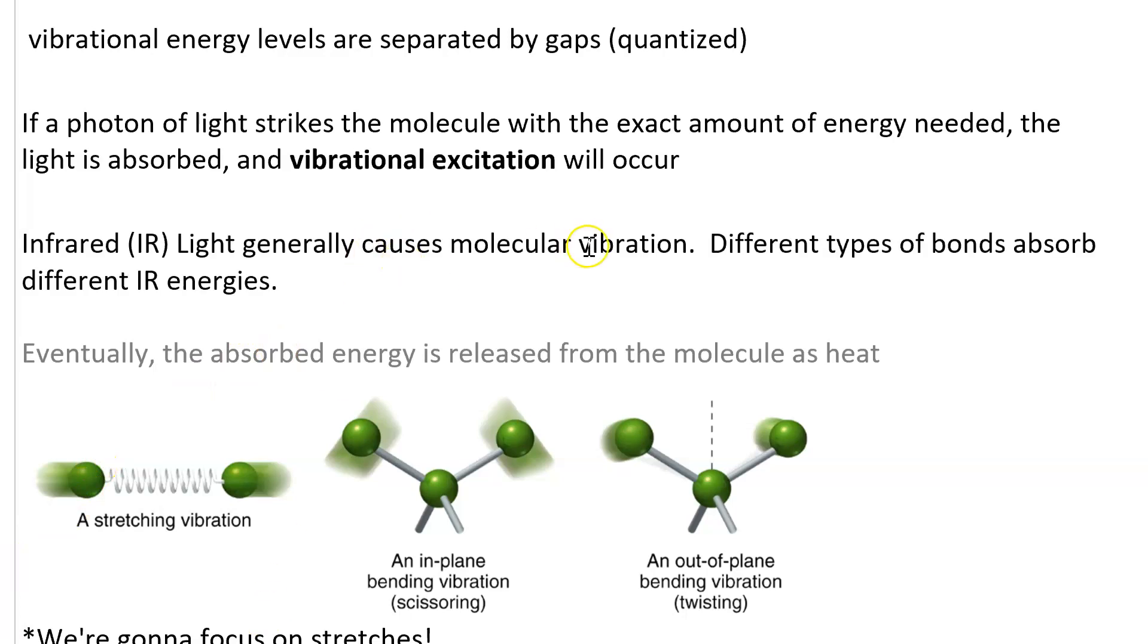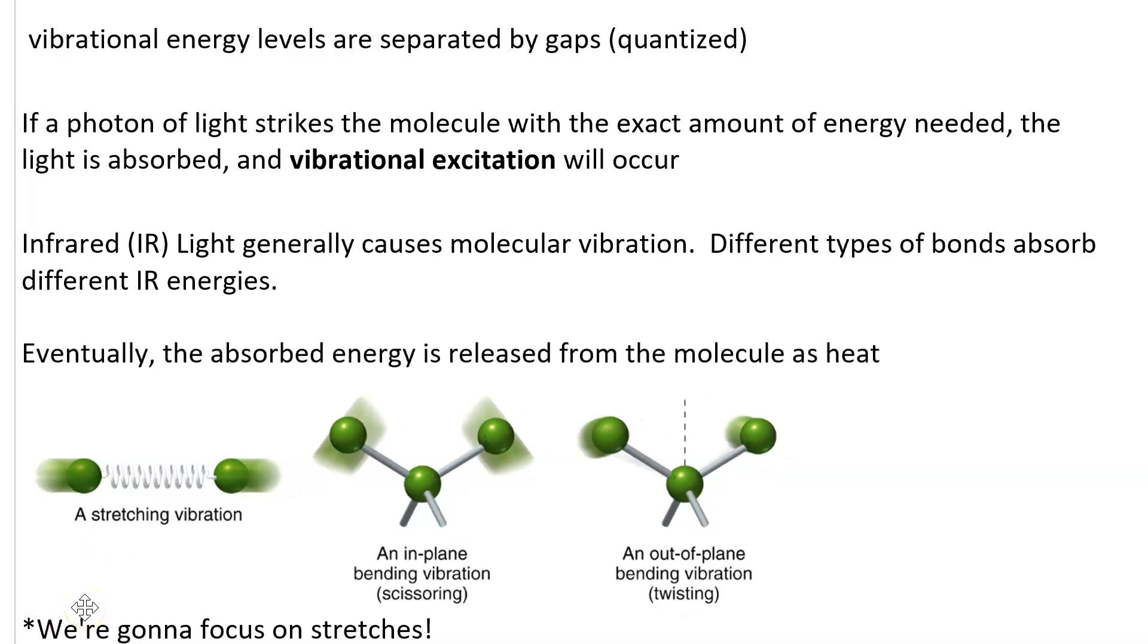Infrared light causes molecular vibrations when it's absorbed and different types of bonds absorb different IR energies. That means different functional groups will have characteristic vibrations. Eventually, the energy absorbed is released from the molecule as heat.